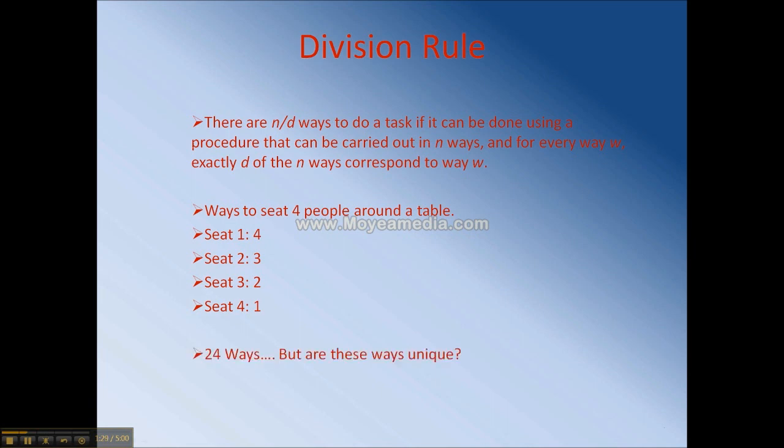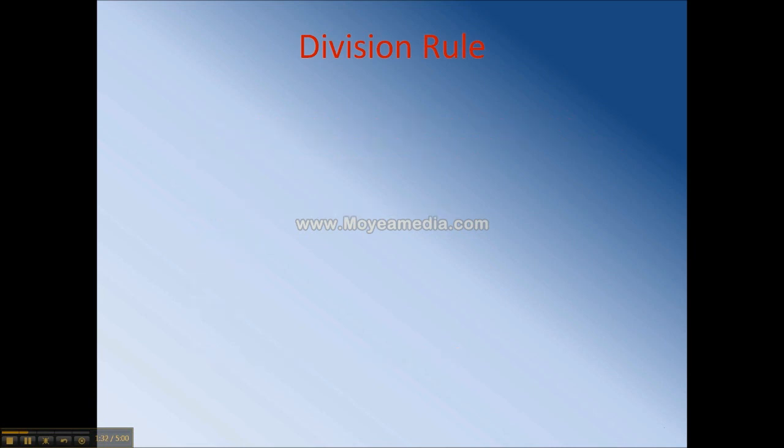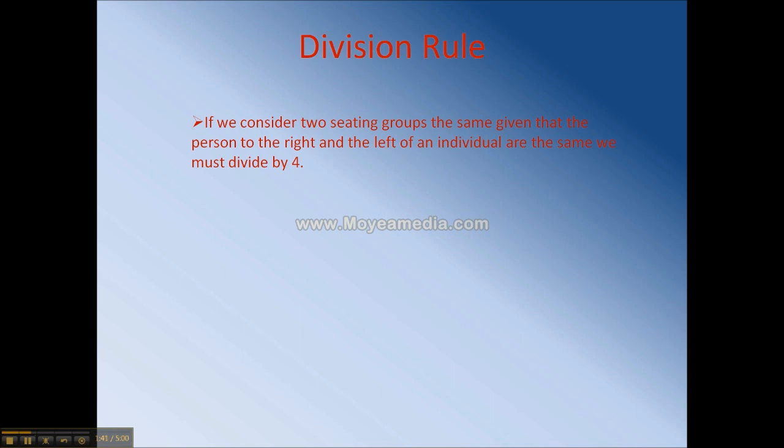This gives us a grand total of 24 ways, but are these ways unique? If we consider that they are sitting in a circle, we can say that two seating arrangements are the same given that the person to the right and the left of the individual are the same.